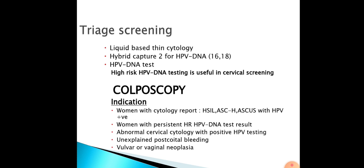Colposcopy is a supplementary tool, not a substitute for cytology. It is recommended for women with persistently positive HPV DNA tests. Colposcopy examination includes visualization of the original squamocolumnar junction, columnar epithelium, and the transformation zone in its entirety. Abnormal areas detected are biopsied under colposcopic guidance.